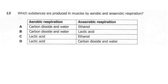Question 13. Which substances are produced in the muscles by aerobic and anaerobic respiration? A: aerobic — carbon dioxide and water; anaerobic — ethanol. B: aerobic — carbon dioxide and water; anaerobic — lactic acid. C: aerobic — lactic acid; anaerobic — ethanol. D: aerobic — lactic acid; anaerobic — carbon dioxide and water. So what is the answer? Is it A, B, C, or D?